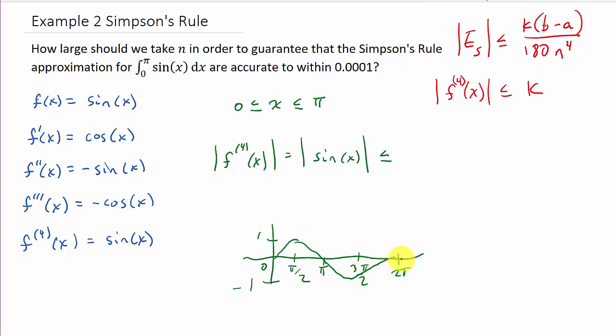We know that sine looks something like that. Well, we're just concerned from 0 to π, and we know the largest that sine will ever be is one. So we know that sin(x) is going to be less than or equal to one. Alright, so we will take k to equal one. Because, see, it's the absolute value of the fourth derivative is less than or equal to k, and we determine k to be one.